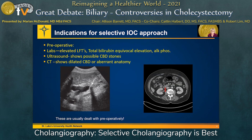We all know the indications for intraoperative cholangiograms: elevated LFTs, maybe your total bilirubin is equivocal — 1.9, 2.1 — your ultrasound may show possible common bile duct stones, or you get a CAT scan showing a dilated common bile duct or maybe a variant anatomy. But these are usually seen preoperatively and are usually dealt with preoperatively. They don't suddenly appear in the operating room. These are reasons to do a cholangiogram, but most of the time we deal with this as a preoperative issue.